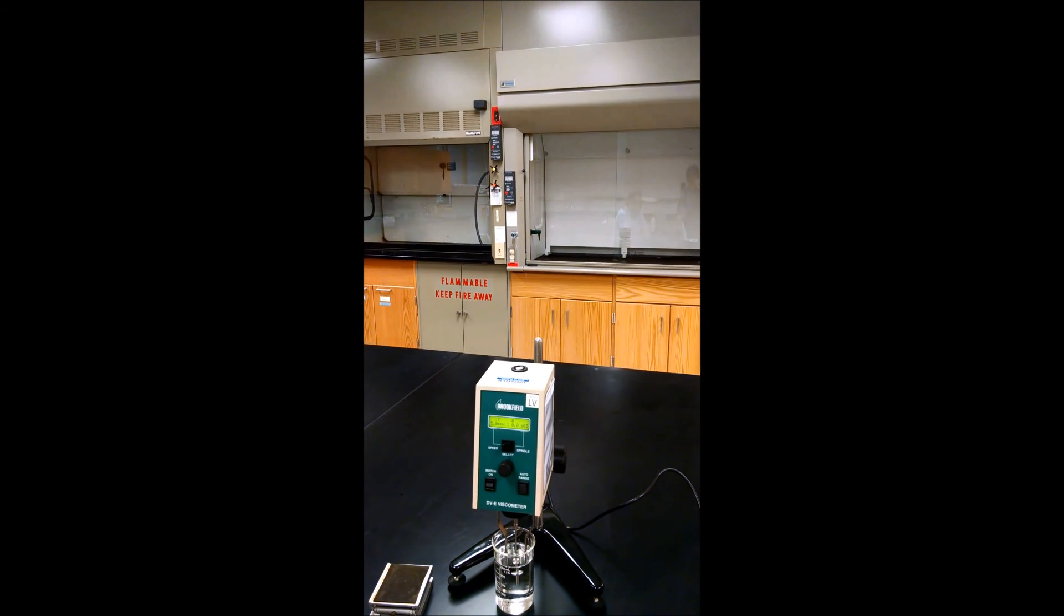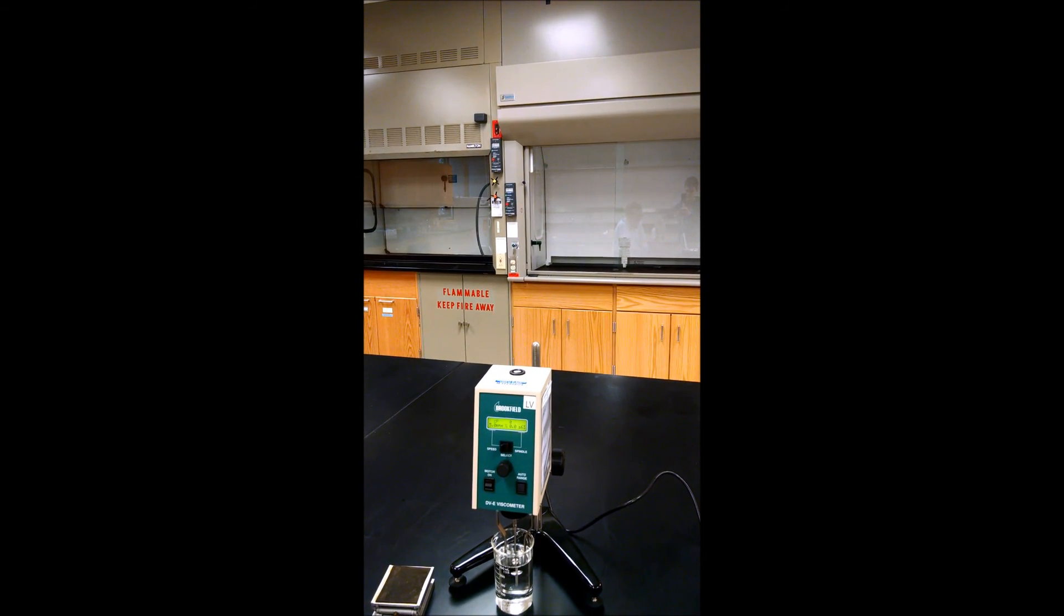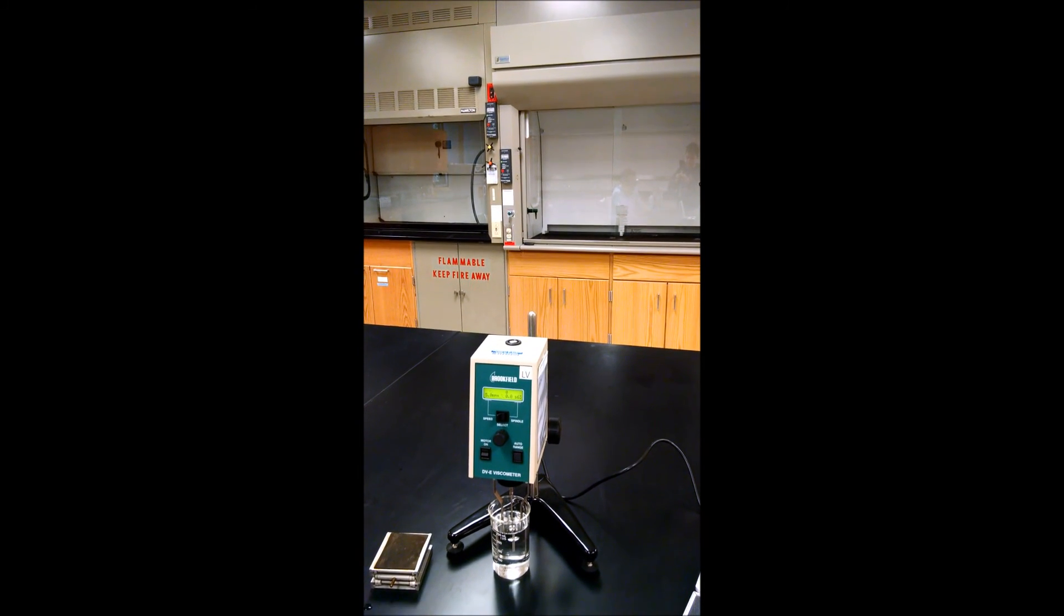This is blinking saying the measurement is under range. We have chosen the wrong spindle for this material. Since it's under range, that means we need to either go faster or get a larger spindle to measure this liquid.